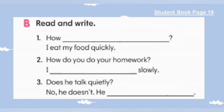Still on student book page 19, point B: Read and write. Ini sama seperti point A, hanya tidak ada gambarnya. Nomor satu — how bla bla bla. Jawabannya: I eat my food quickly. Berarti pertanyaannya ke kamu, jadi kalian pakai: How do you eat? Bagaimana kamu makan? I eat my food quickly — aku makan makananku dengan cepat.